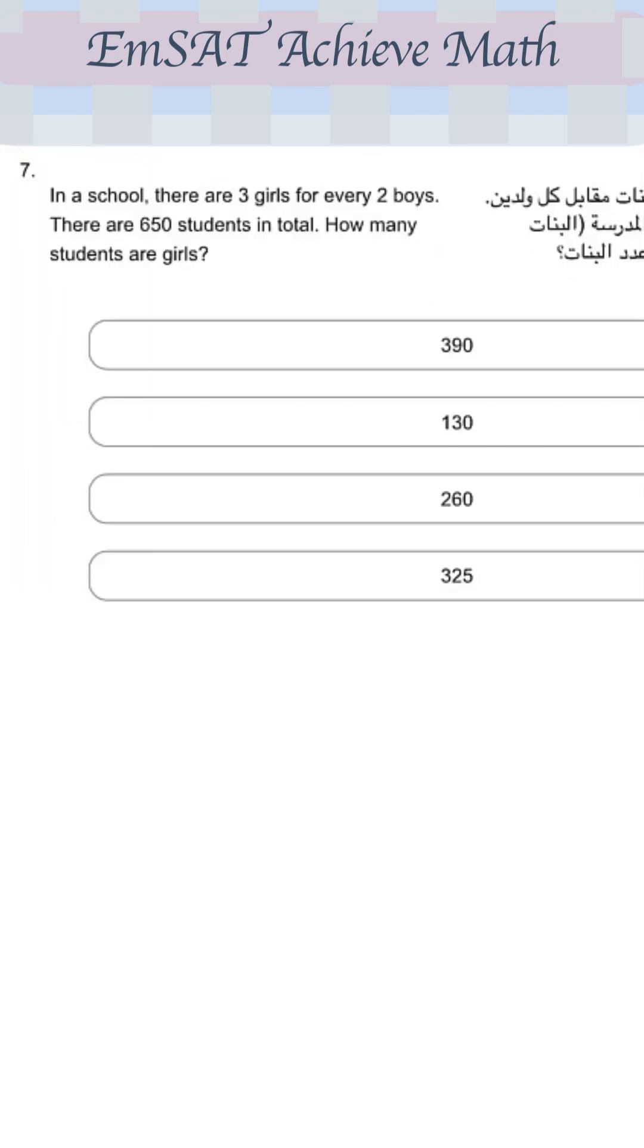In a school, there are 3 girls for every 2 boys. There are 650 students in total. How many students are girls? Now here, the easiest way is to add the number of boys and girls together. You get 3 plus 2 is 5. And divide the total number of students by 5. You get 130.